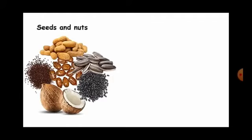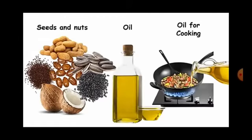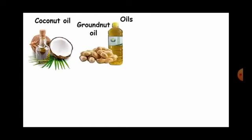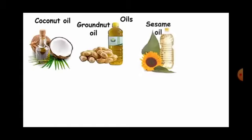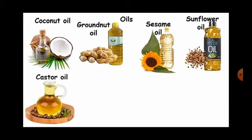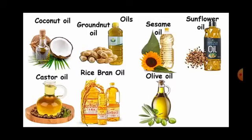Seeds and nuts give us oil. We use oil to cook. Some oils we use are coconut oil, groundnut oil, sesame oil, sunflower oil, custard oil, rice bran oil, olive oil, and mustard oil.